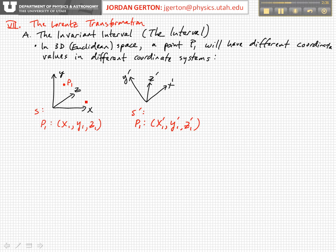Now if we have another point, P2, then again, Y2, Z2, and X2 prime, Y2 prime, Z2 prime. So the point here is just that in normal three-dimensional space, different points will have different coordinate values in different coordinate systems.